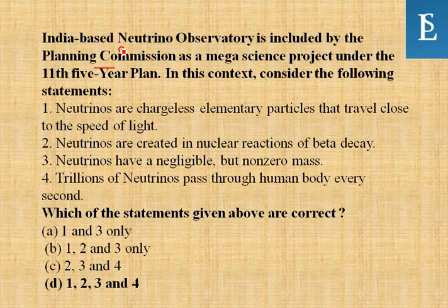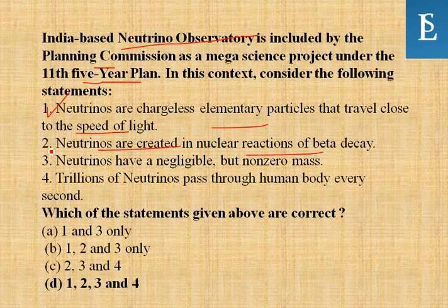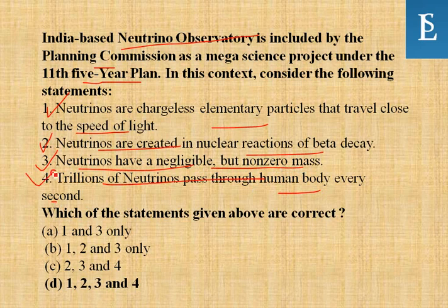India-based Neutrino Observatory is included by the Planning Commission as a mega science project under the 11th Five-Year Plan. Consider these statements: neutrinos are chargeless elementary particles that travel close to the speed of light — correct; neutrinos are created in nuclear reactions of beta decay — correct; neutrinos have negligible but non-zero mass — correct; trillions of neutrinos pass through the human body every second — correct. All four statements are right.